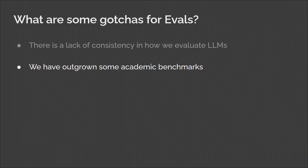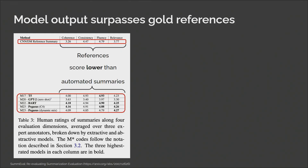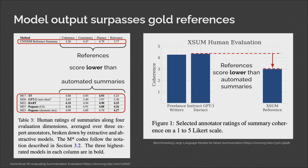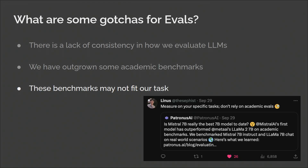Speaking of academic benchmarks, we may have outgrown some of them. For example, the task of summarization — on the top you see the human evaluation scores on the reference summaries, and on the bottom you see the evaluation scores for the automated summaries. The point is that all the numbers on the bottom are already higher than the numbers on top. Here's another one on the XSum dataset — extreme summarization — where all the human evaluation scores are lower than InstructGPT, and that's not even GPT-4. With all these benchmarks so easily available, we sometimes forget to ask ourselves: is it a fit for our task? Does MMLU really apply to your task? Maybe if you're building a college-level chatbot. We should be measuring our apps on our tasks and not just rely on academic evals.